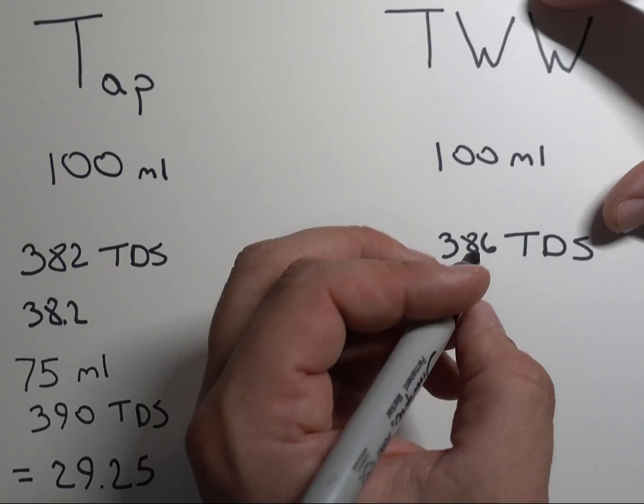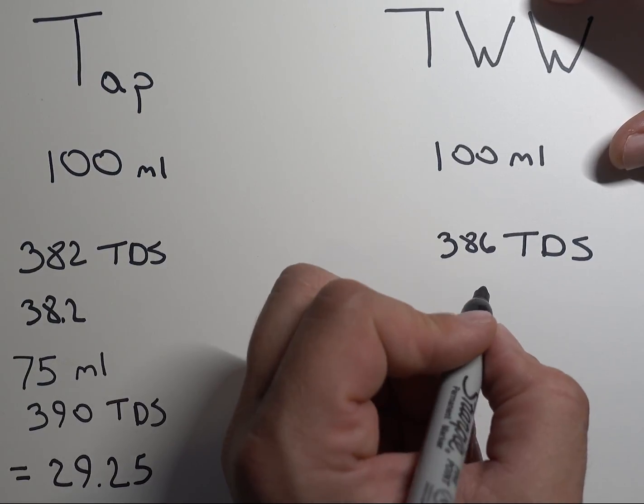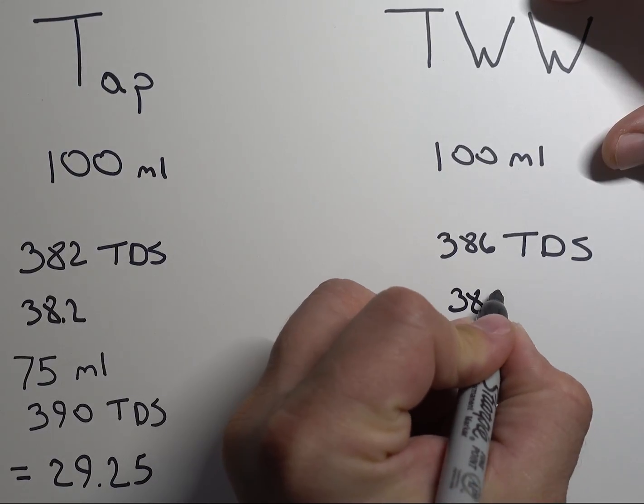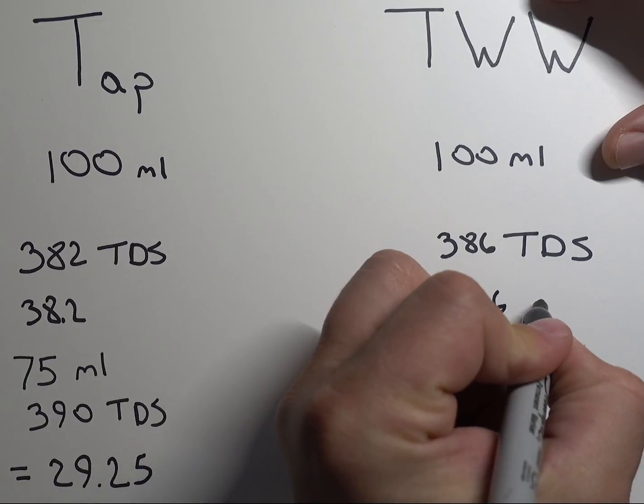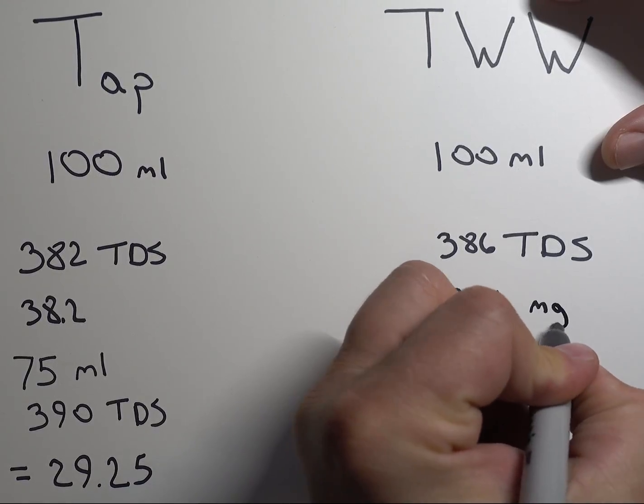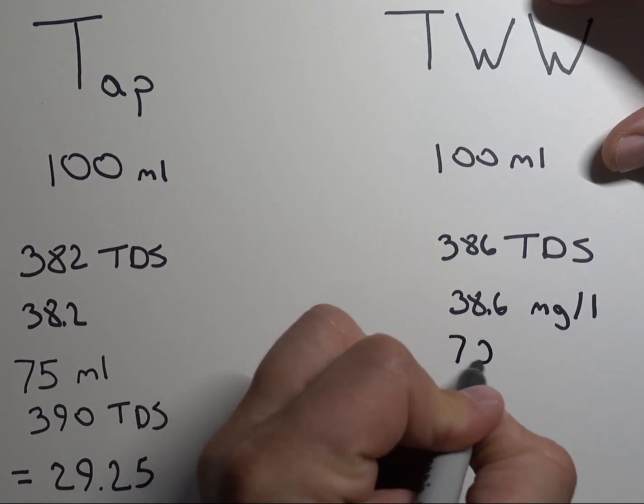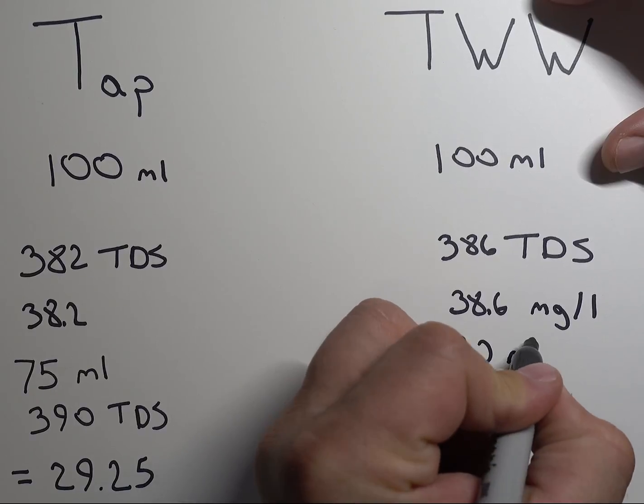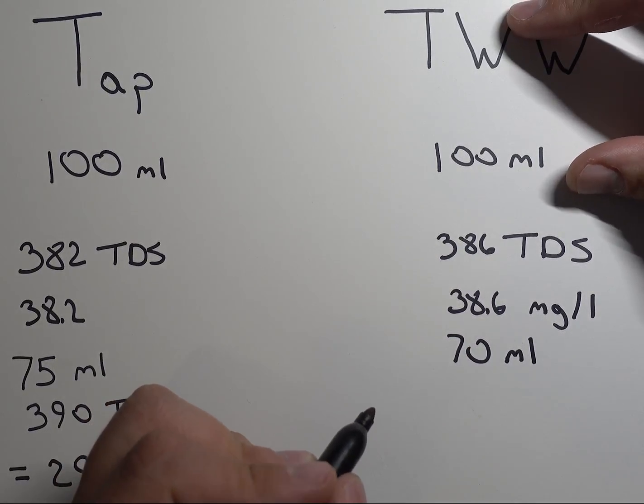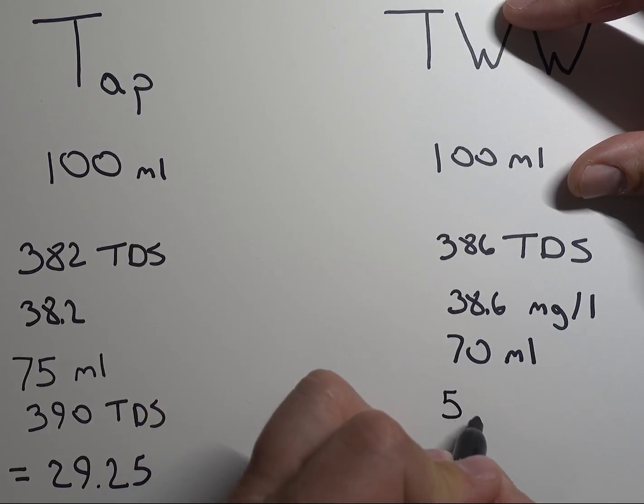So now we go over to third wave water, and we started off at 100 milliliters. The TDS of this was 386, so that's 38.6. Again, TDS parts per million and milligrams per liter are all the same. So we ended up with 70 milliliters. So we boiled off a little more water than we did on the other one. I let it go a little bit longer. The resulting TDS was 549.